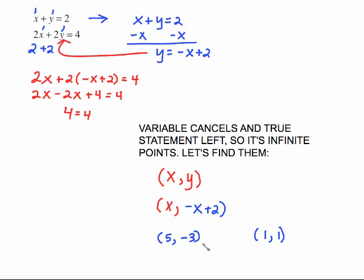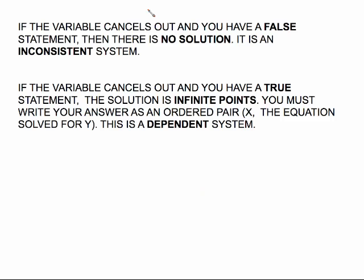They must fit this criteria though. You can't just randomly say, let's say x is 7 and y is 55. That's not what we mean by infinite points. It has to be the points that fit this criteria, x, negative x plus 2. The conclusion on this is if the variable cancels out and you have a false statement, then there is no solution and it's an inconsistent system. If the variable cancels out and you have a true statement, the solution is infinite points. And you must write your answer as an ordered pair, x comma then, that equation that you have to solve for y. And this is a dependent system.